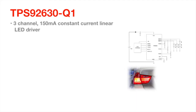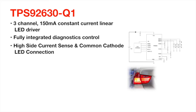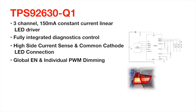Let's talk about using the TPS92630-Q1 for your rear lighting applications. This is a 3-channel device with a maximum of 150mA per channel. It's a constant-current, linear LED driver designed to be a cost-effective, low-EMI solution for rear-lamp applications. It also has fully integrated diagnostics control. The TPS92630-Q1 uses a high-side current source to integrate LED strings with a common cathode connection, saving wiring cost and improving reliability. Each channel's peak current is globally set with a REF pin, and each individual string's brightness and on/off can be adjusted through PWM.